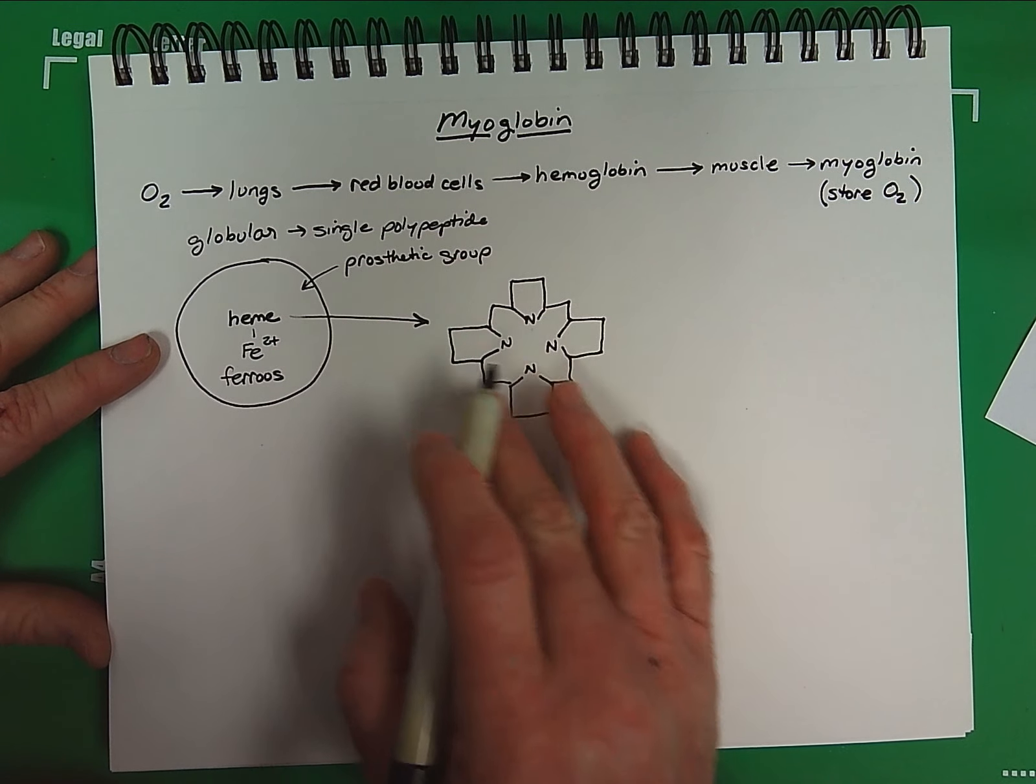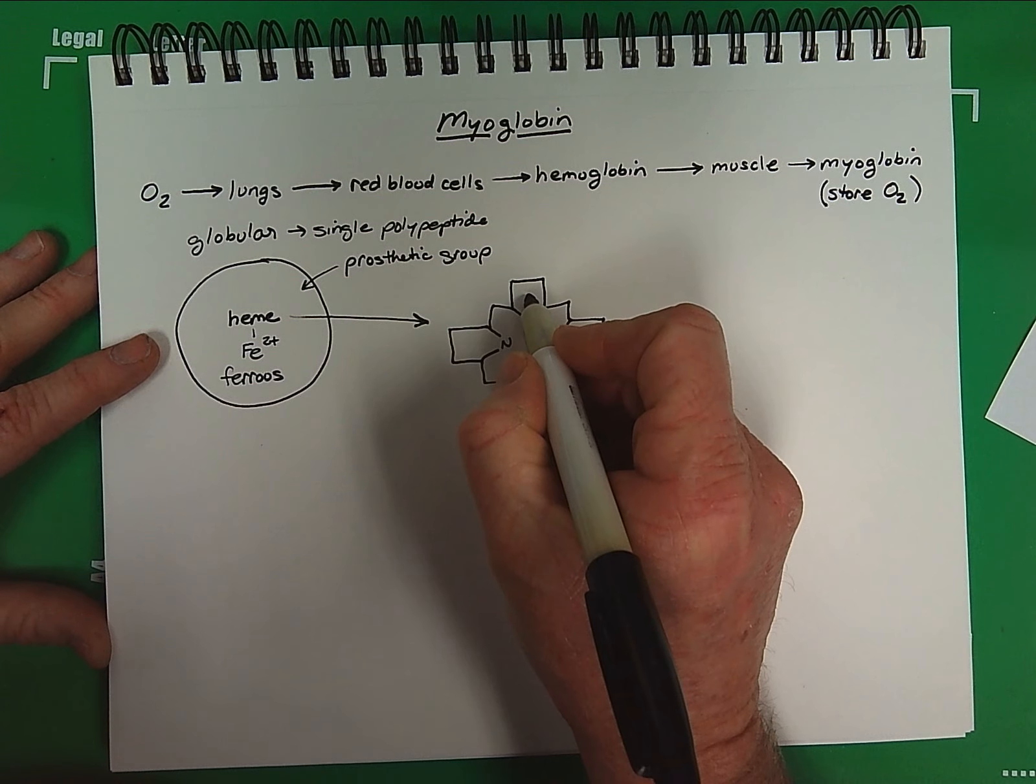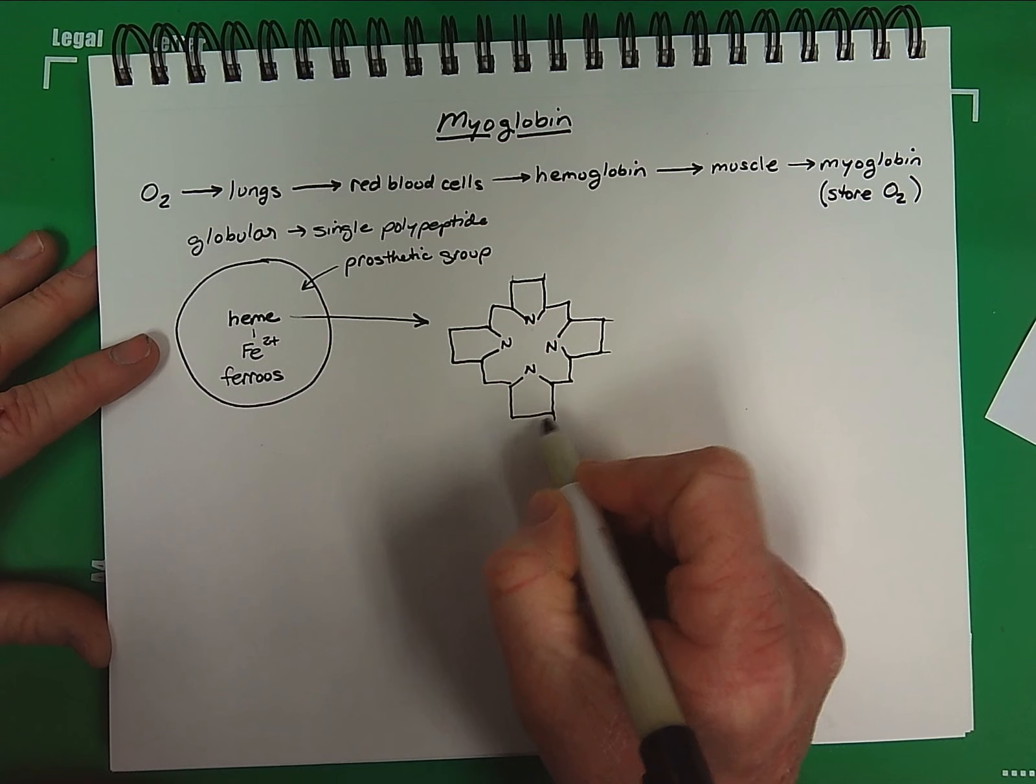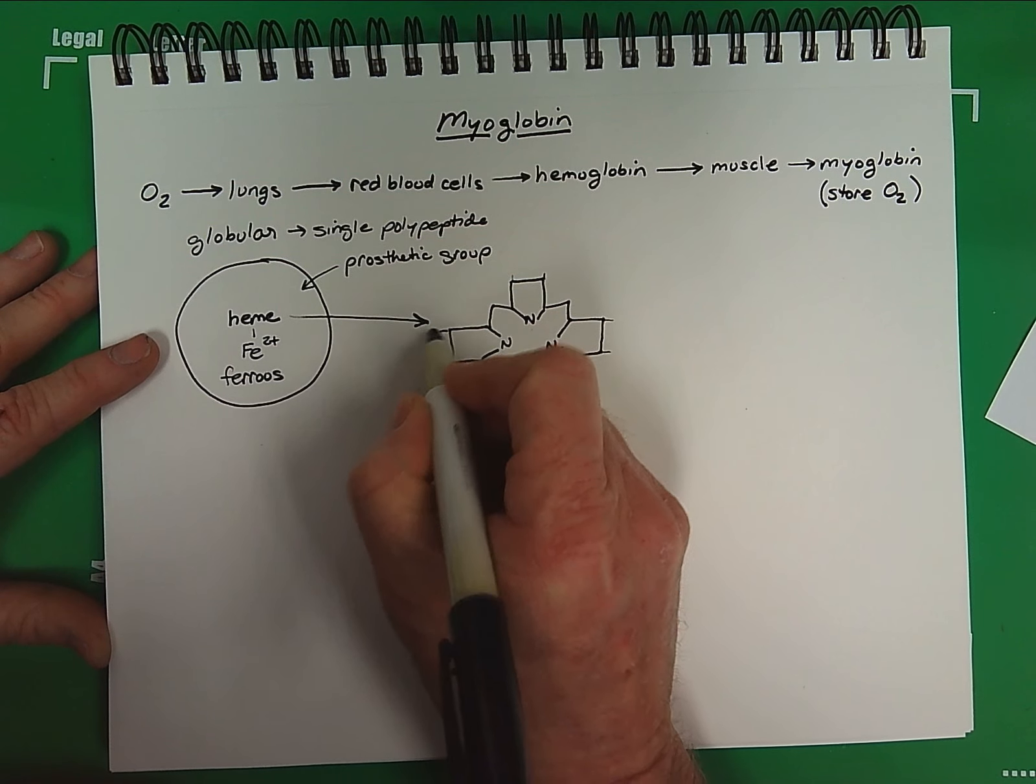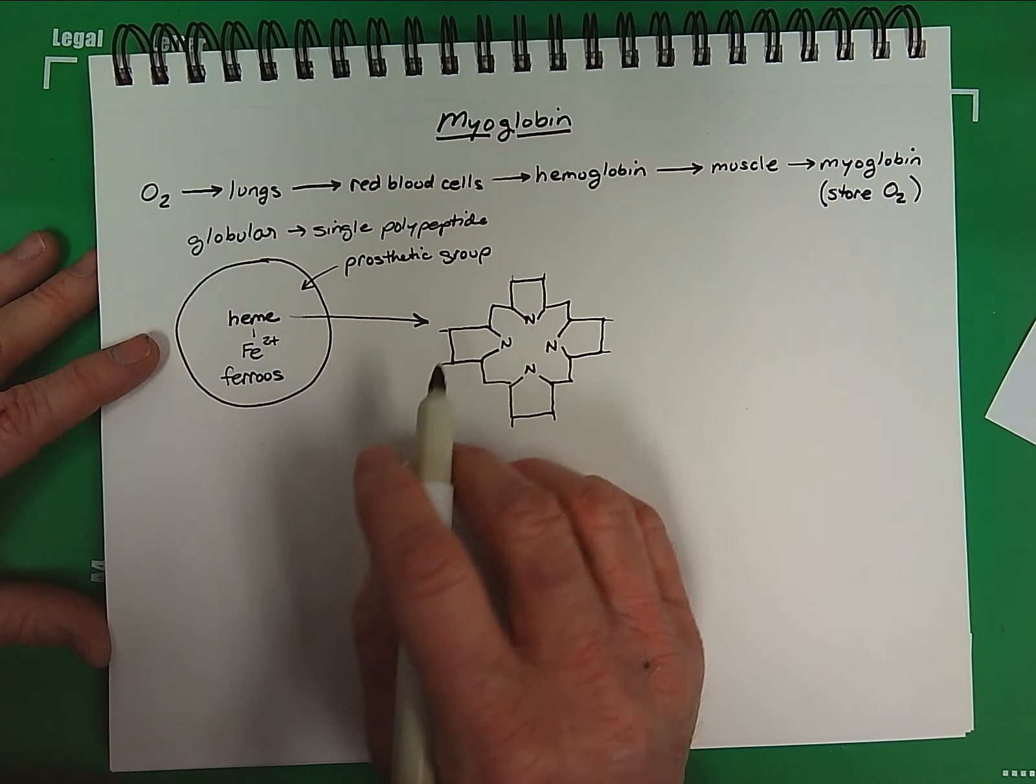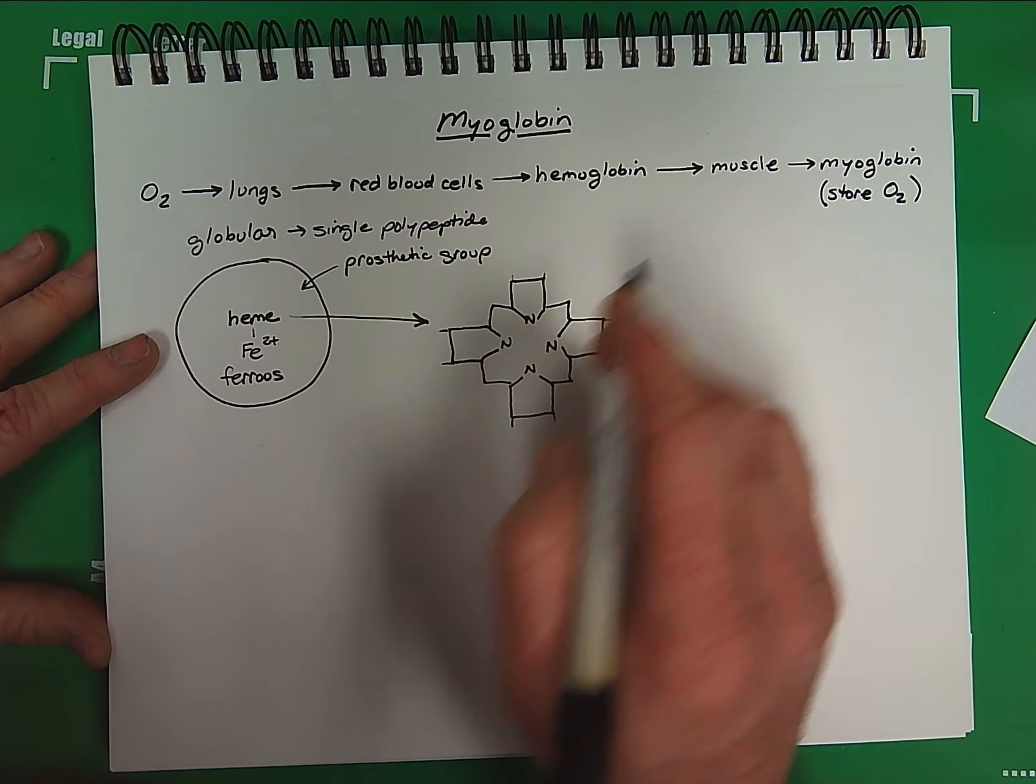Now there are various double bonds distributed in the pyrrole rings, and there are groups that come off of the pyrrole rings. These are all involved in the biosynthesis of heme. But what I'd like you to recall is just the basic structure of heme itself with the four pyrrole rings.